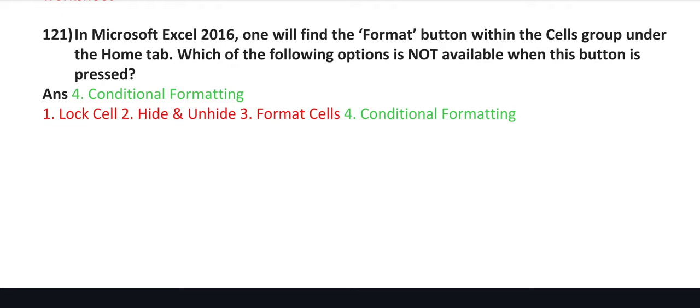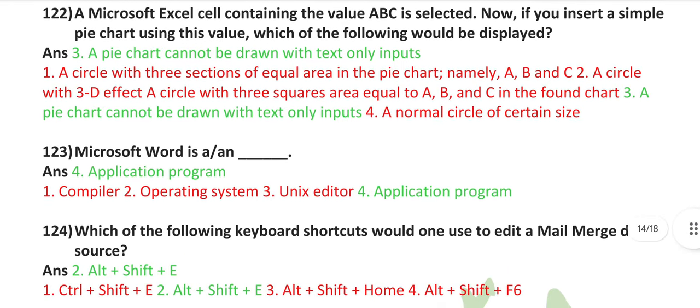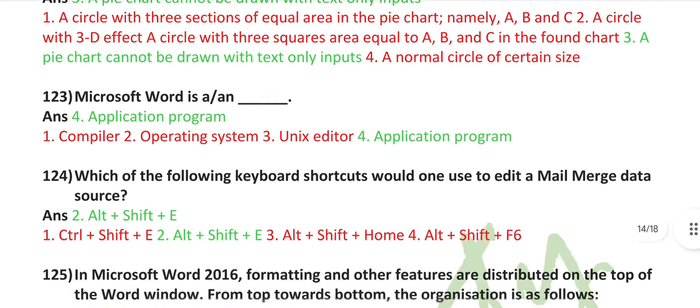In Microsoft Excel 2016, you will find the format button within the cells group under the home tab. Which of the following options is not available when this button is pressed? Conditional formatting. A Microsoft Excel cell containing the value ABC is selected. Now, if you insert a simple pie chart using this value, which of the following would be displayed? A pie chart cannot be drawn with text-only inputs. Microsoft Word is an application program.